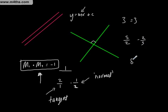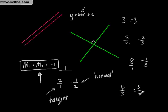If one line has a gradient of 8, then the perpendicular is negative 1 over 8, because that was 8 over 1. If we've got 4 thirds, then the perpendicular is minus 3 quarters. In your workings you will generally state that M1 multiplied by M2 — the two gradients — equals negative 1.